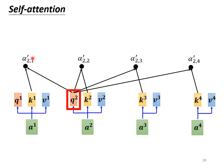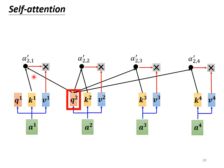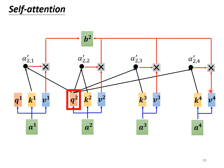After getting the attention scores α2,1 through α2,4, we multiply these values by v1, v2, v3, v4 respectively. We multiply α2,1 by v1, α2,2 by v2, α2,3 by v3, and α2,4 by v4, then sum them up to get b2. Similarly, you can multiply a3 by a transform to get q3 and then get b3, and multiply a4 by a transform to get q4 and then get b4. This is how we calculate b1 to b4 from a1 to a4.